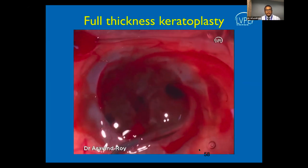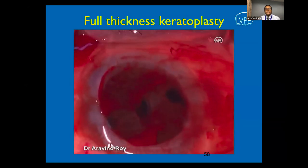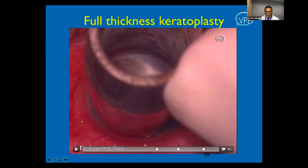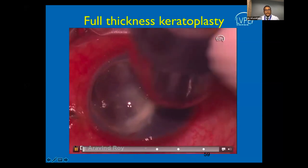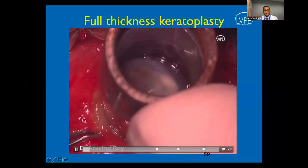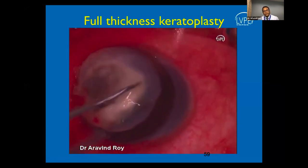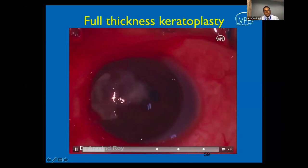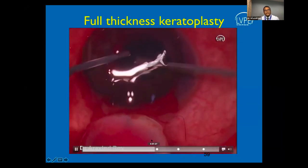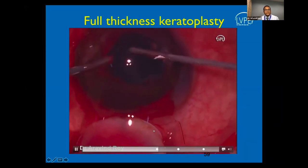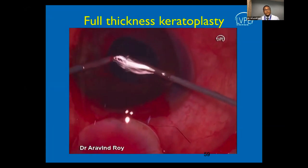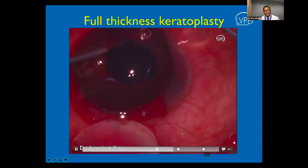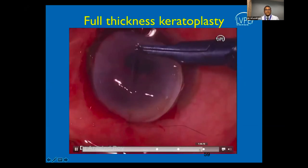After the vitrectomy, viscoelastic is placed, the chamber angles are reformed, and keratoplasty proceeds by placing the donor corneal button. In cases of large infero-nasal perforation, lifting the diseased cornea reveals underlying infiltrates and exudates at the pupillary axis — sometimes only vitreous sitting there — requiring identification and a quick automated vitrectomy before the button is securely placed.